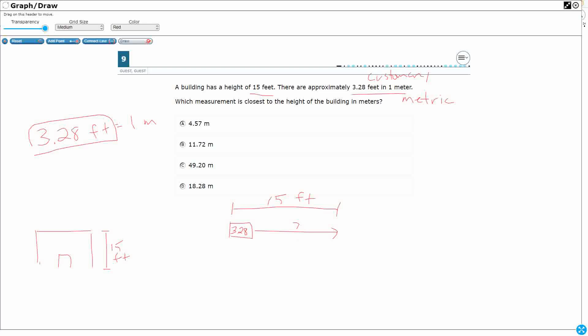Now another way to think about this would be to look at it as a proportion, right? So if I were to say 3.28 feet, let's make sure we keep our units there, is to 1 meter as, and then I'm going to keep my feet across from feet, 15 feet is to x meters, right? So we've got our feet across from feet. We can cross multiply. So 3.28x equals, and then 15 times 1 is just 15. So it looks like we're going to need to divide 15 by 3.28, which is what this representation shows us as well. We need to divide the whole by the parts to see how many parts there are. So let's do that.